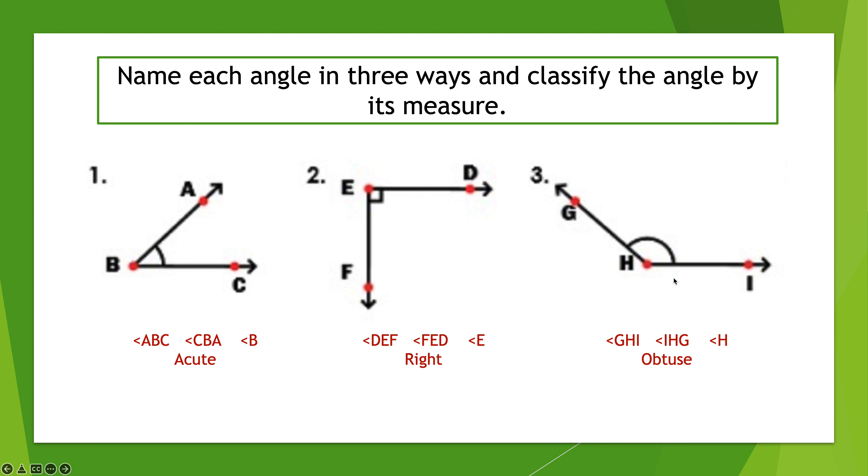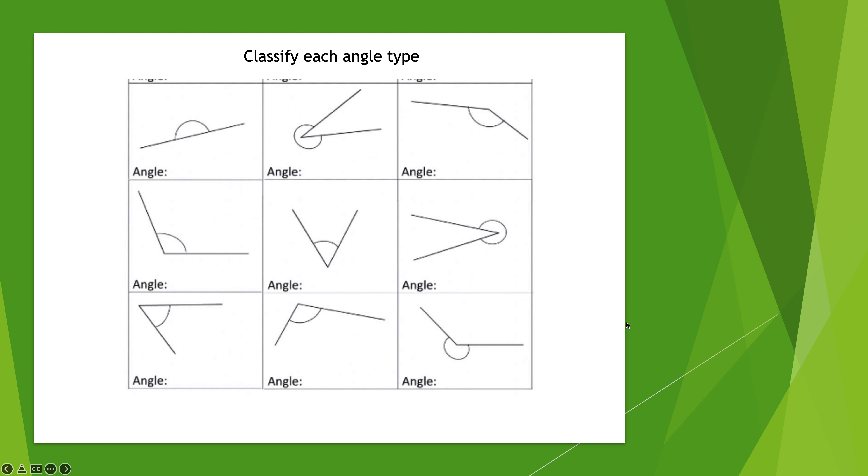Now we have nine angles to look at and to classify each angle by type. Stop and start. Okay, so this first angle, well that makes a straight line, so we're going to call that—